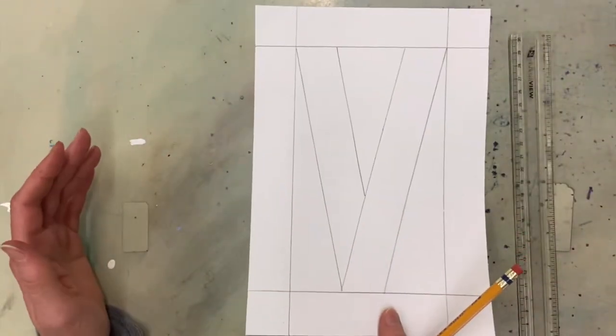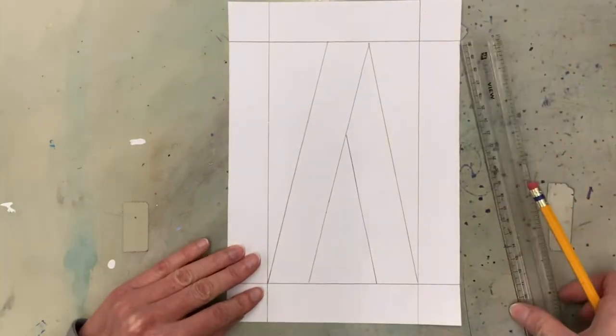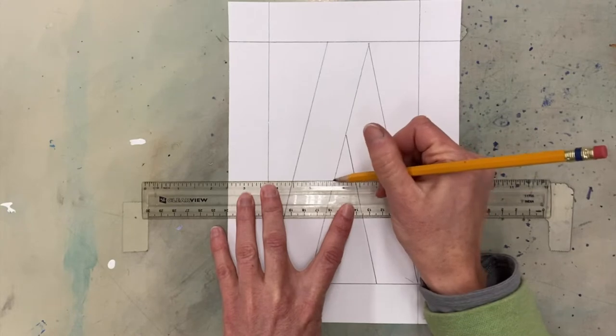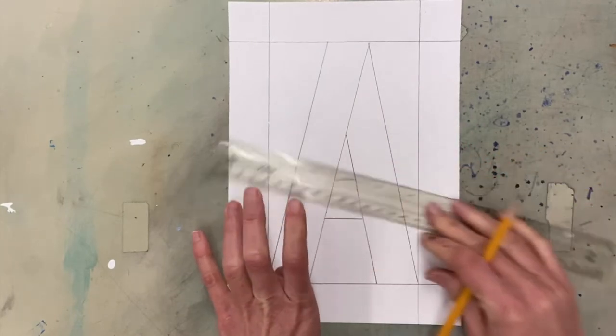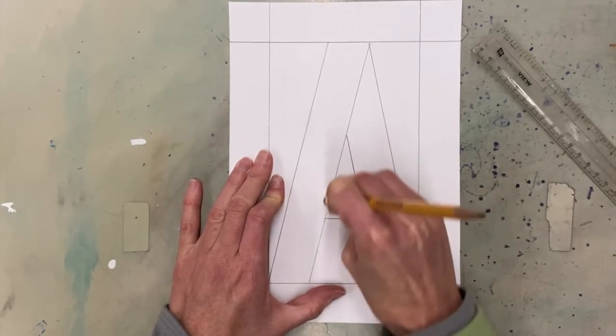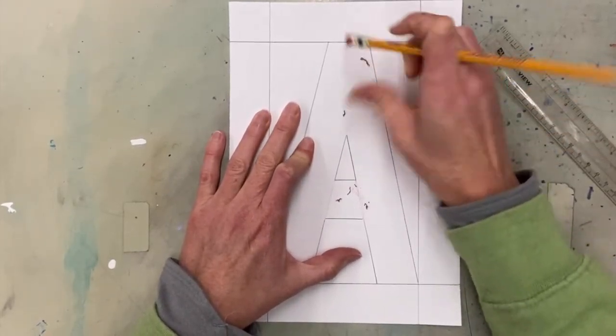So look, already I could have a V if I wanted to, but I'm doing a letter A. So I'm going to take my ruler, flip it this way and connect like this and draw on both sides of the ruler. Now I'm going to take my eraser and any lines that are inside the letter I'm going to get rid of. There we go.